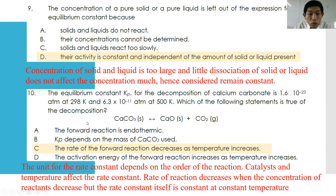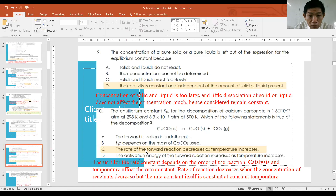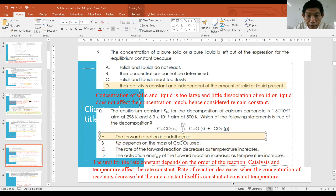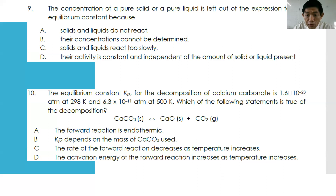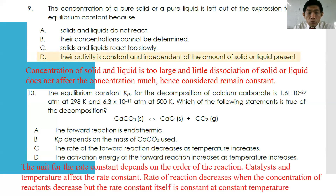The forward reaction being endothermic is true — answer A. Statement B: Kp depends on the mass of calcium carbonate — not true, because it is a solid. Statement C: rate of forward reaction decreases as temperature increases — not true. Statement D: activation energy of the forward reaction increases as temperature increases — activation energy has nothing to do with the rate constant. The answer is A.